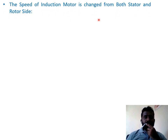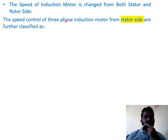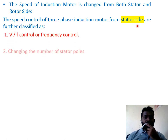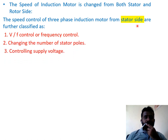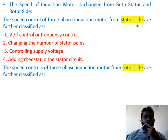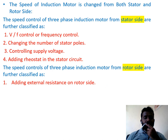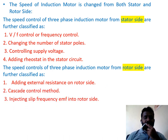The speed of an induction motor can be changed both from the stator and rotor side. Speed control from the stator side includes: V/F control or frequency control, changing the number of stator poles, controlling the supply voltage, and adding a rheostat in the stator circuit. From the rotor side: adding external resistance on the rotor side, cascade control method, or injecting slip frequency EMF into the rotor circuit.